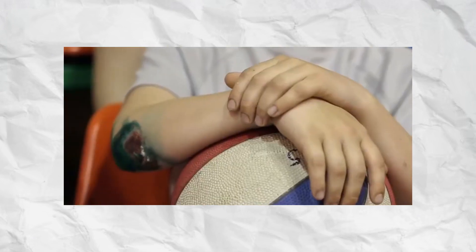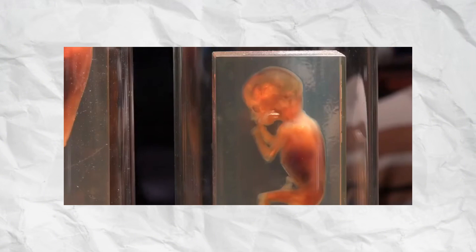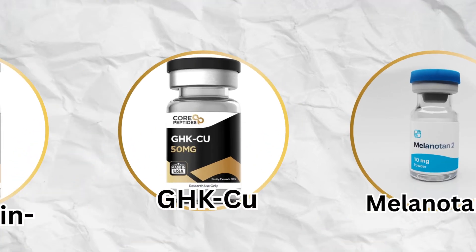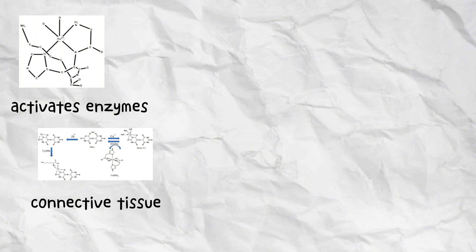GHK-Cu is a naturally occurring tripeptide composed of glycine, histidine, and lysine bound to a copper ion. It plays a vital role in wound healing, collagen synthesis, and anti-inflammatory processes. By delivering bioavailable copper to tissues, GHK-Cu activates enzymes involved in rebuilding skin, blood vessels, and connective tissue.